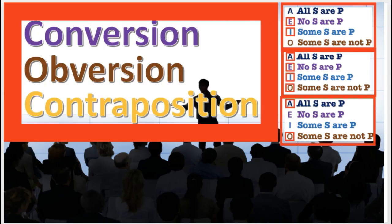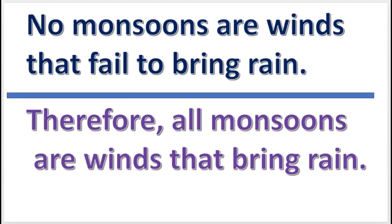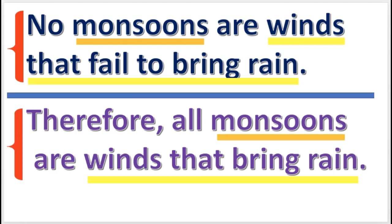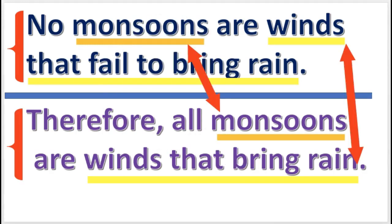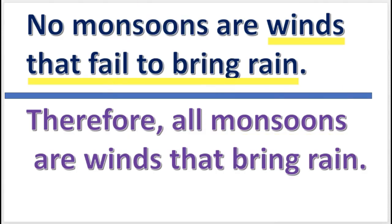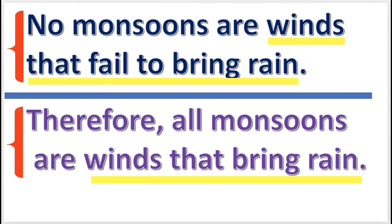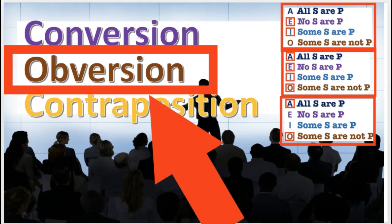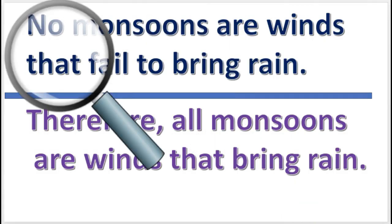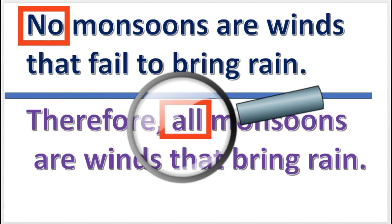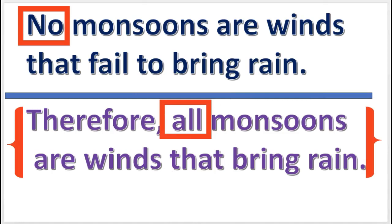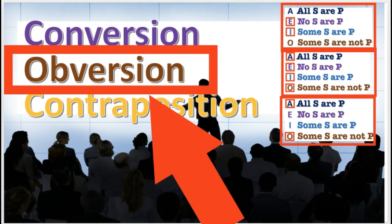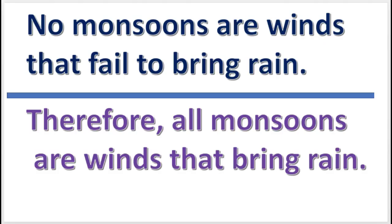Let's use these operations to evaluate inferences. If you're given this inference, you first compare the subject and predicate terms in the premise to the terms in the conclusion. You will notice that the terms are in the same order, but the predicate term in the premise has been replaced with its complement in the conclusion. This suggests obversion. Also notice the quantifier of the premise is the word 'no,' and it has been replaced in the conclusion with the word 'all.' So this conclusion was produced by obverting the premise. Remember that obversion gives logically equivalent results for all four types of propositions, so the inference is valid.